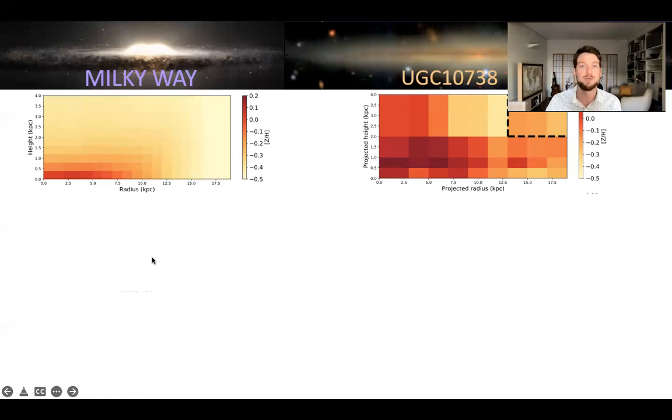So for the metallicity, which is the first panel I'm showing, indeed in the Milky Way, we're finding that the metallicity is the highest along the plane of the disk, and as you go off the plane or towards larger radius, you're getting a decrease in metallicity. We're seeing the same global behavior for UGC 10738, with the exception of this region here between 0 and 0.5 kpc, which is impacted by dust. But other than that, we're seeing the same lower metallicity towards larger radius and off the plane of the disk.